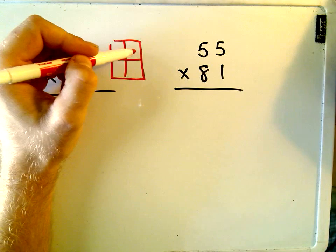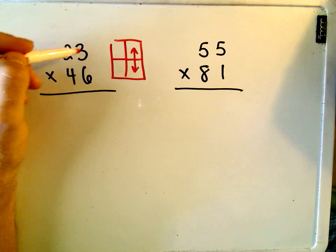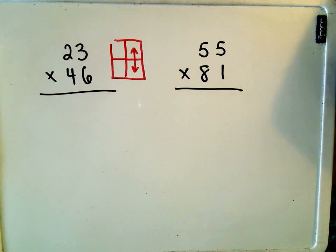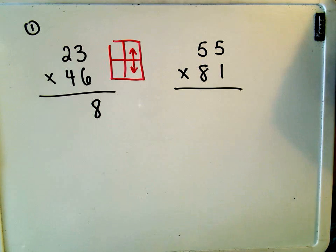The first thing I do is I multiply the top number and the bottom number. So I'm going to multiply 3 times 6, and that gives me 18. So I drop the 8 down and I carry the 1 mentally.